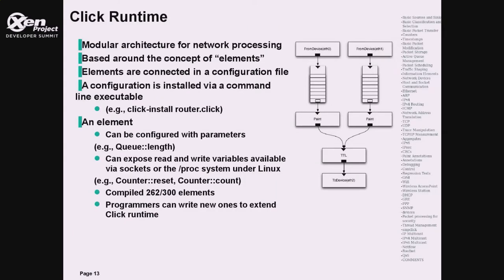Let me talk about Click. ClickModularRouter is a network processing framework initially designed for making routers. Its main concept is around processing elements. Users create a configuration specifying connections of these elements. These elements can have parameters which are exposed as variables in the proxy/profile system or via sockets. For ClickOS, we managed to compile 262 out of 300 available elements. As you can see from the listing on the side, you can observe the variety of packet processing we can do with it.